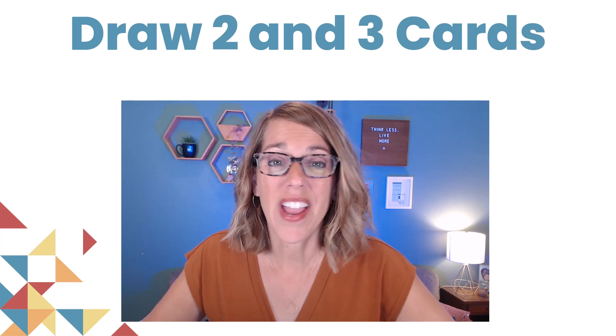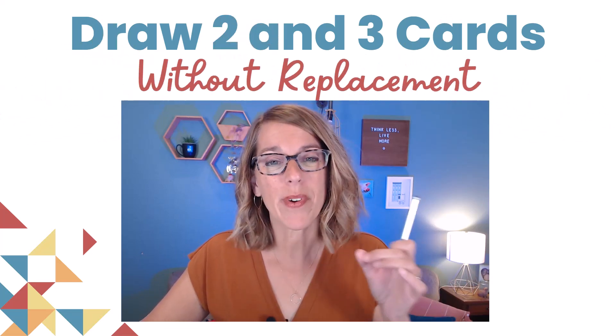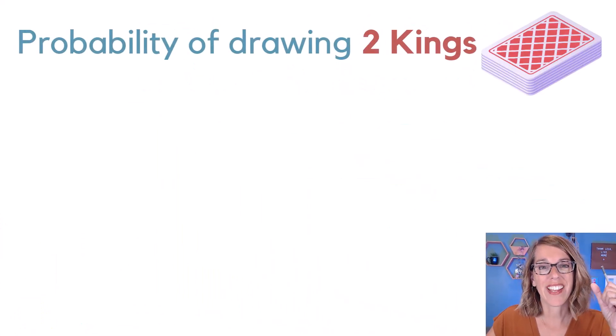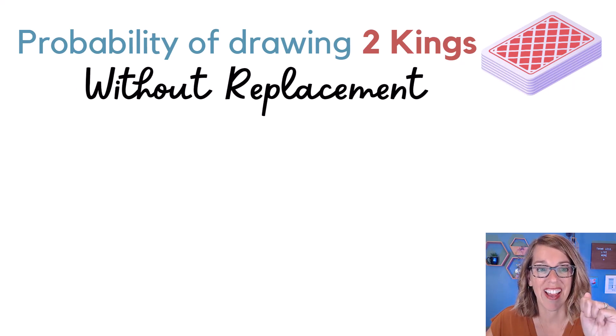Let's do some probability with two and three cards at a time, and we're going to do these without replacement. We're going to start by looking at the probability of drawing two kings. So we're going to be drawing one and not putting it back in the deck.